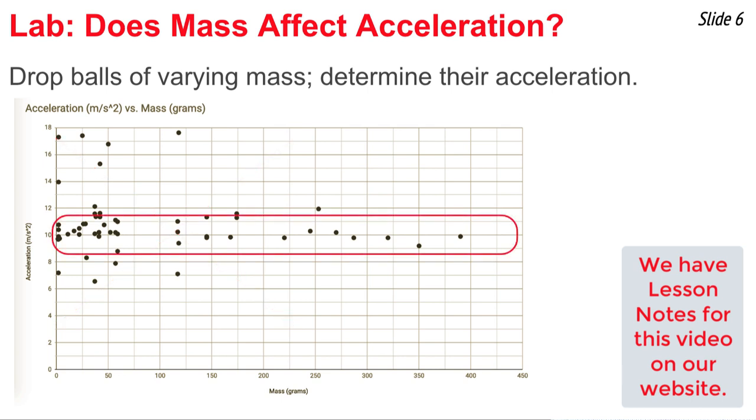Now one of the problems, there's several outliers here in the data set. But what you'll notice is that many of the data points follow right around 10 meters per second squared, plus or minus about 1 or 2 meters per second squared. And you especially notice this pattern as you get out to 100 grams and greater.